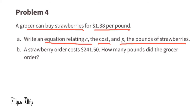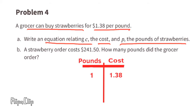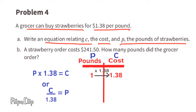Problem number four: a grocer can buy strawberries for $1.38 per pound. Part a — write an equation relating c, the cost, and p, the pounds of strawberries. Making a table with pounds on the left and cost on the right, one pound costs $1.38. The equation is p times 1.38 equals c, or working backwards, c divided by 1.38 equals p.